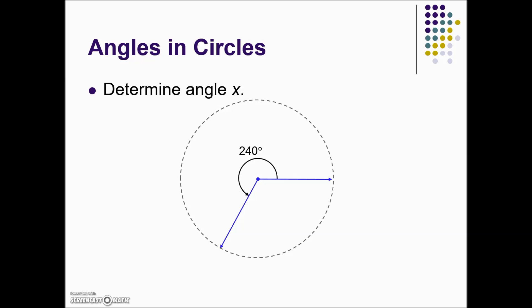This slide is asking us to determine the measure of angle x. So using the fact that a circle has 360 degrees, we will take 360 minus the rotation measurement known, 240 degrees, to give us the remaining rotation or measure of this angle which is 120 degrees.